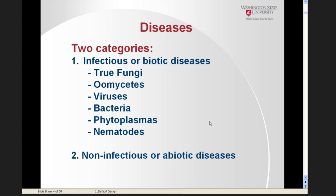This is a lot of background information that most of you are probably already well aware of. Diseases are typically categorized into two types: infectious or biotic diseases, caused by true fungi, oomycetes, viruses, bacteria, phytoplasmas, and nematodes; and non-infectious or abiotic diseases, which include things like environmental stress, chemical toxicities, and nutrient deficiencies — things not caused by a living organism.